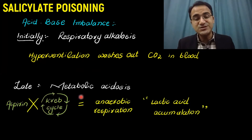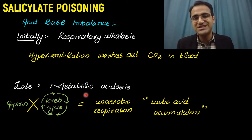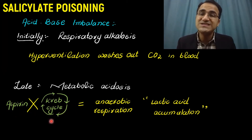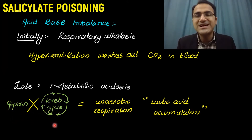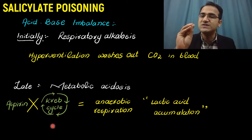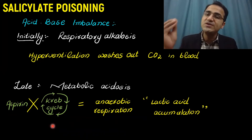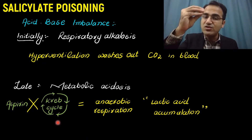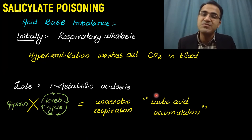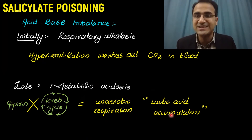In the later stages, the patient will be in metabolic acidosis. This occurs because aspirin blocks the Krebs cycle, inhibiting aerobic metabolism of glucose. That glucose then enters anaerobic metabolism, which produces lactic acid, resulting in metabolic acidosis. So in later stages, you find metabolic acidosis due to lactic acid accumulation.